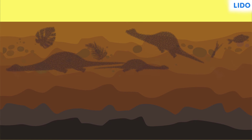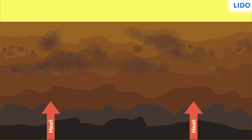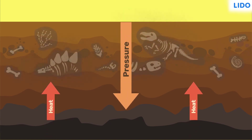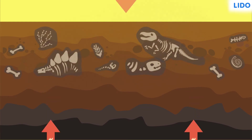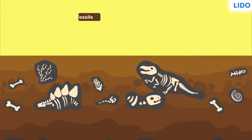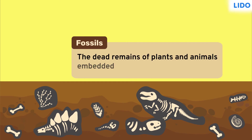Also, the heat under the earth's surface along with the pressure caused these remains to convert into fossils and then coal. Fossils are formed when the dead remains of plants and animals get embedded in the rocks.